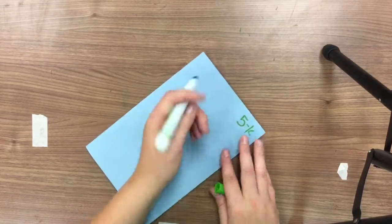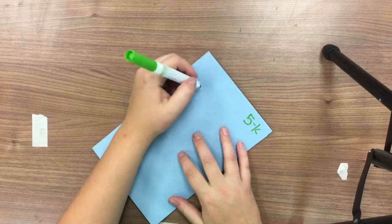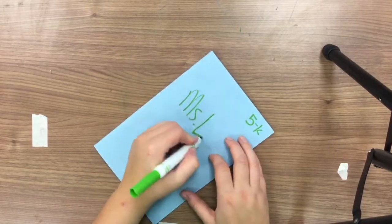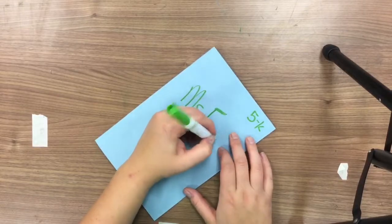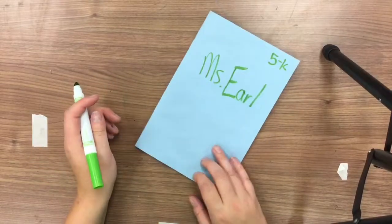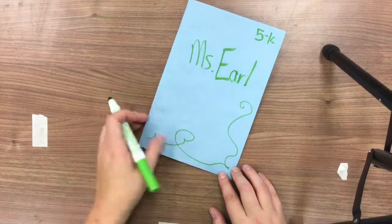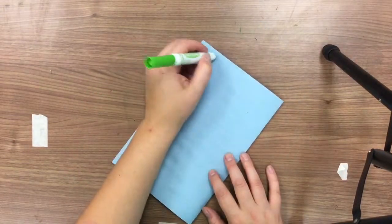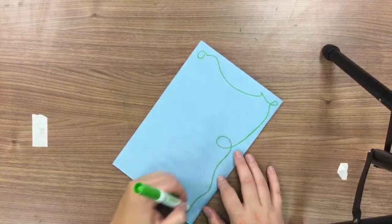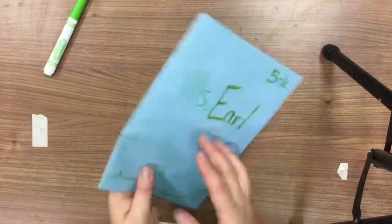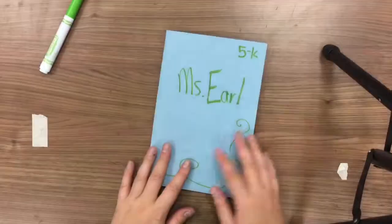And then you can also put your class code. I'm going to do 5K. And then I'm going to put my name nice and visible and clear on the front. Okay. And then you can go ahead and decorate the front and even the back. Okay. And that's it for today and doing your sketchbook.